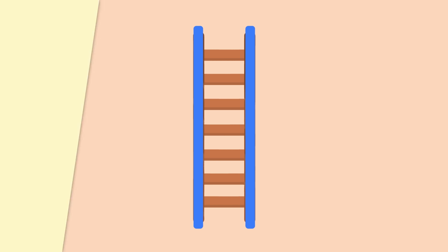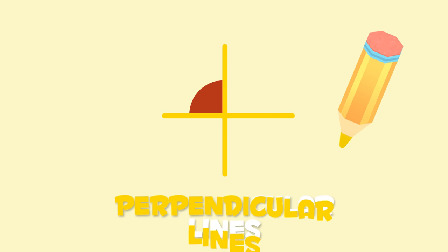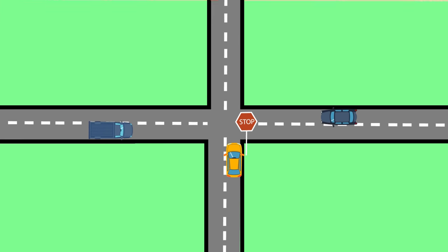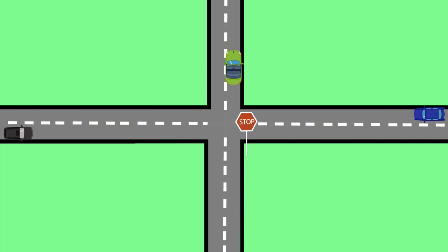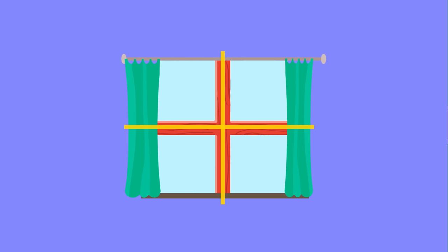We can turn a parallel line to make it vertical. When parallel lines crisscross, they change to perpendicular lines. Perpendicular lines look like this crossroads or the frame of this window.